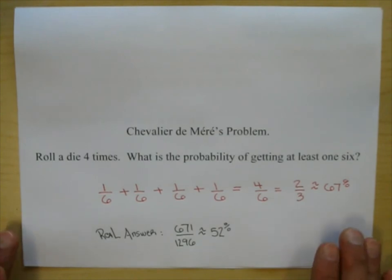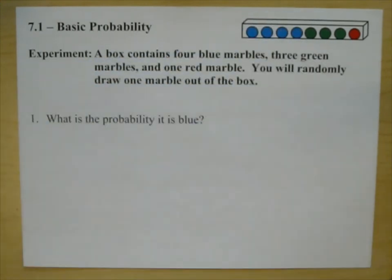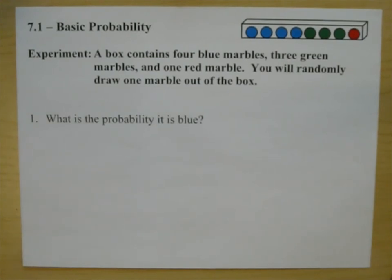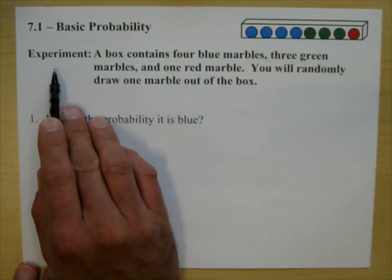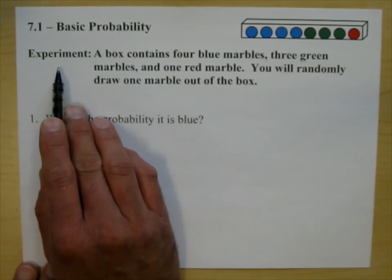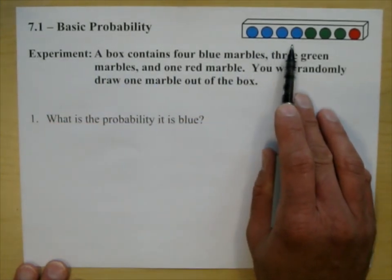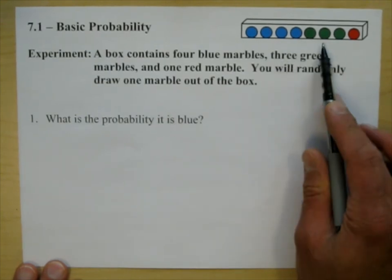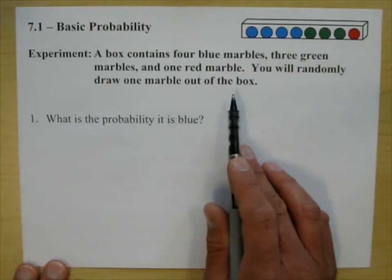Let's go ahead and start off with something a little more basic, but we will come back to this. In probability, an experiment is a process that can be repeated and may result in different outcomes, like rolling a die. This experiment involves a box that contains four blue marbles, three green marbles, and one red marble. You will randomly draw one marble out of the box — that's the experiment.